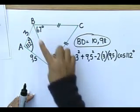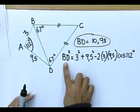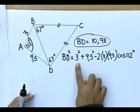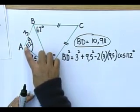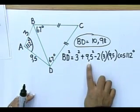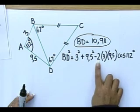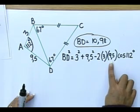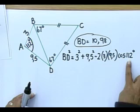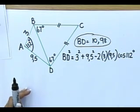What am I looking for? BD. So, you say BD squared is equal to 3 squared, that's the one side, plus 9.5 squared minus 2 times 3 times 9.5. What is my included angle? The cos of 112 degrees.